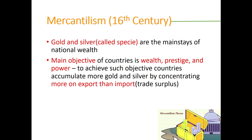The main objective of countries under mercantilism was wealth, prestige, and power. To achieve such objectives, countries accumulated more gold and silver by concentrating more on exports than imports — a trade surplus. They favored state regulation and centralization in international trade, arguing that the government should maximize exports and minimize imports to accumulate more gold. Tariffs and quotas were used by governments to ensure more exports and fewer imports, and subsidies were given to local products to increase a country's export capacity.